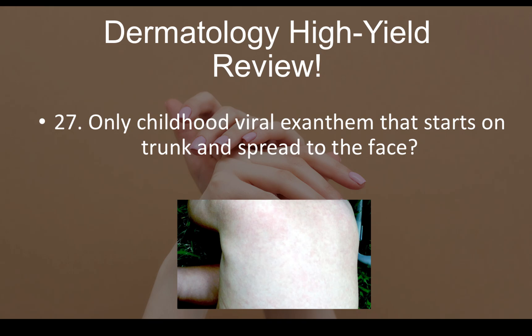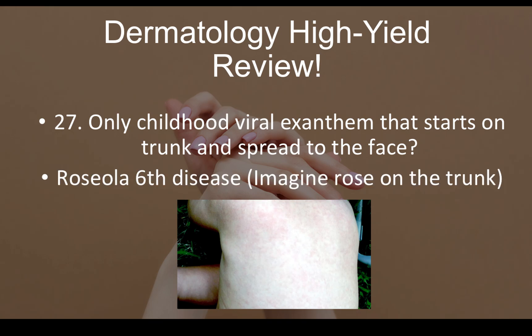Question number twenty-seven: what is the only childhood viral exanthem that starts on the trunk and spreads to the face? That would be roseola — sixth disease. All others start on the face and spread down. Mnemonic: imagine a rose on a trunk — rose makes you think of roseola, which starts on the trunk and spreads upward.